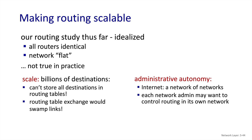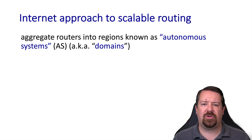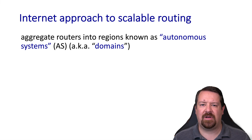We also have the issue that the different entities or networks making up the internet are managed by different organizations, and each of those entities may want to control routing in a different way within their own network. So in order to make routing scalable on the internet, we identify these separately controlled regions as autonomous systems. One ISP might be an autonomous system, an enterprise customer might have their own autonomous system, a university might be an autonomous system, and each is able to control the internals of their own network independently.